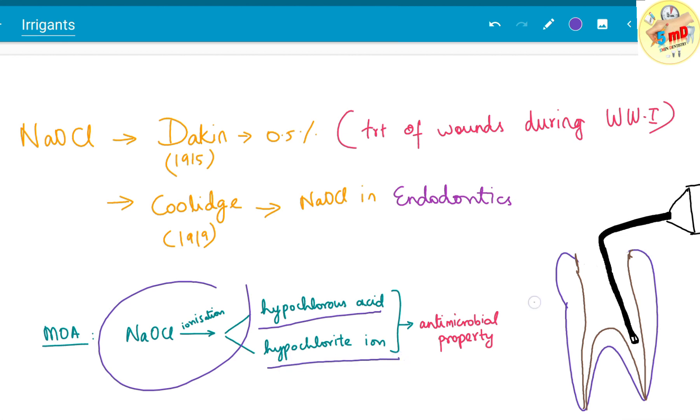Sodium hypochlorite was introduced into endodontics by Coolidge in 1919. Dakin was the first person to use it in treatment of wounds during World War I at 0.5% concentration, also known as Dakin's solution.